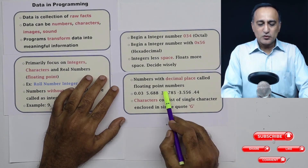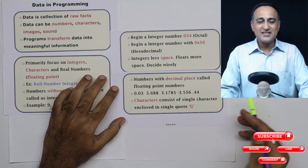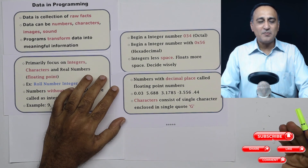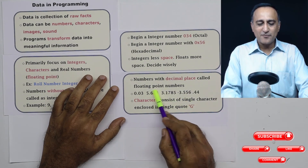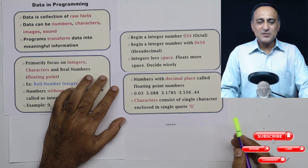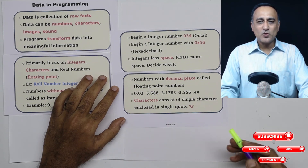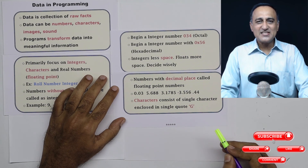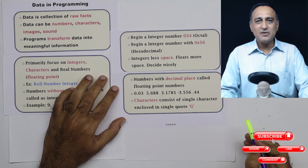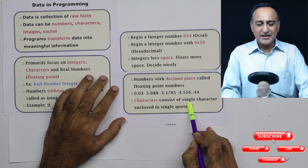You would use floating point numbers in cases like pi, or when calculating a salary that could be 10,000 rupees and 50 paise — those are examples of floating point or real numbers. Now, what are characters? Suppose I have to accept somebody's gender: it could be F, M, or O for others. These are known as character type data.